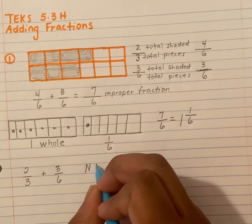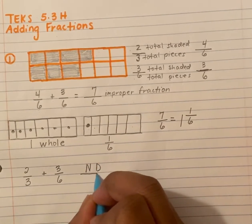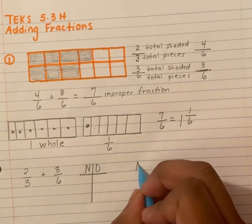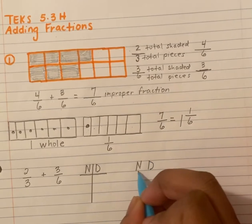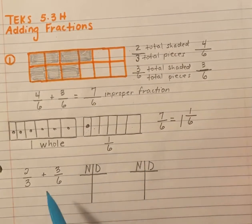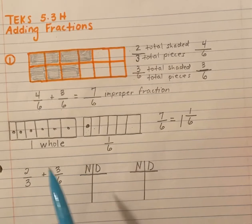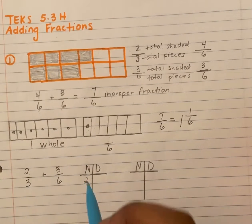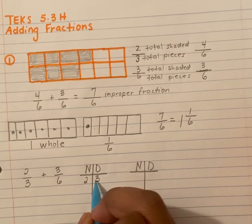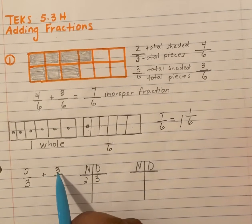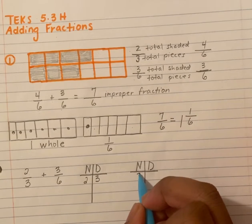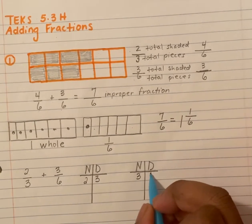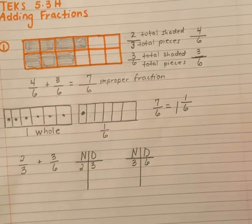If we did not have a picture, we would use the same ND chart. Remember, the ND chart helps us to find the common denominators between fractions. The common denominator: my numerator is two, my denominator is three; my numerator is three, my denominator is six.